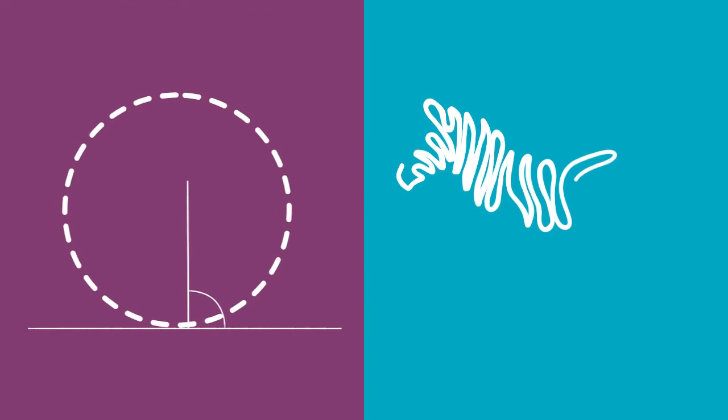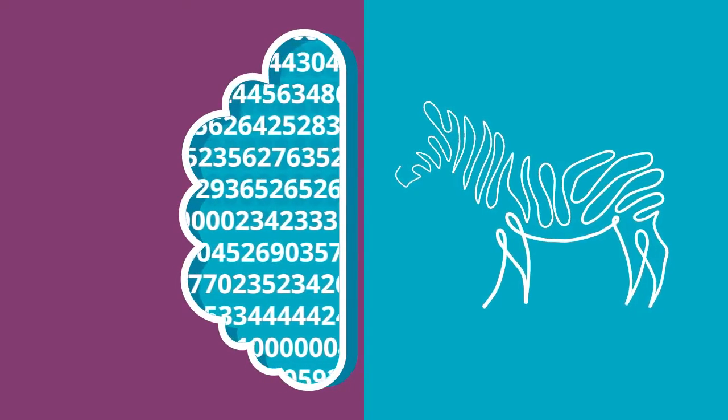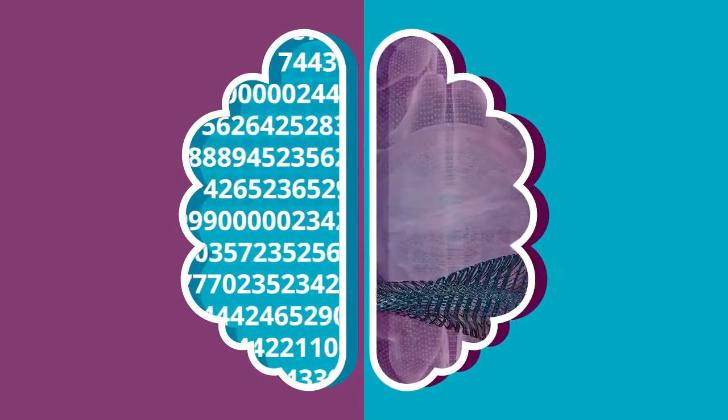This dichotomy is based on the assumption that we tend to think either with the left or with the right half of the brain. The left is responsible for logical and rational thinking, the right for creativity and emotions.